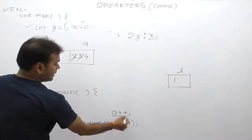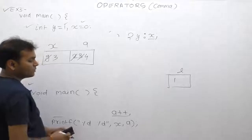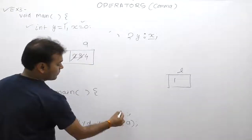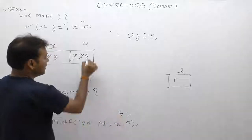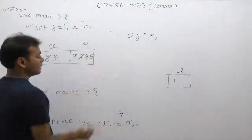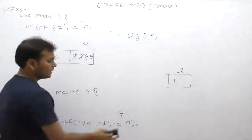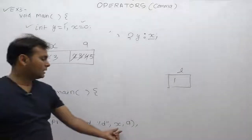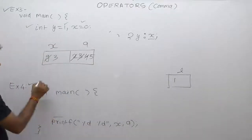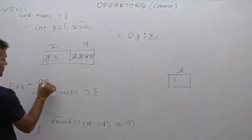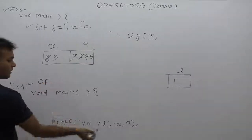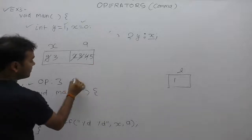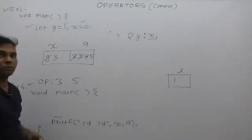Next, the third expression: a++ (post-increment). First, the current value of a, which is 4, is used for replacement, then a is incremented to 5. This expression is also removed after evaluation. The final values are: x is printed as 3 and a is printed as 5. This is the final result of Example 4.